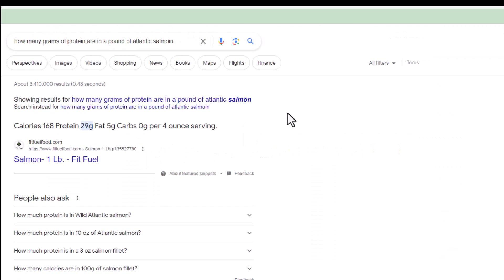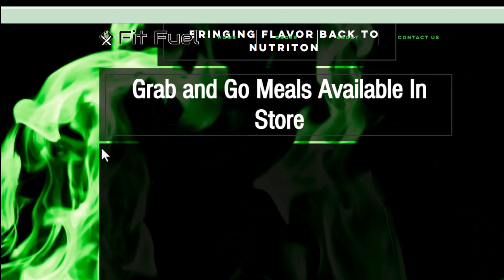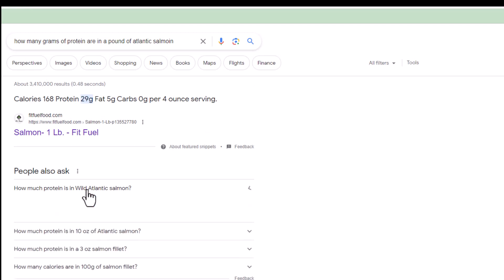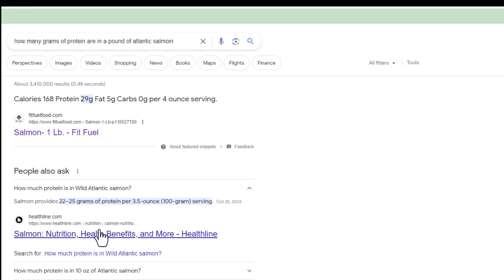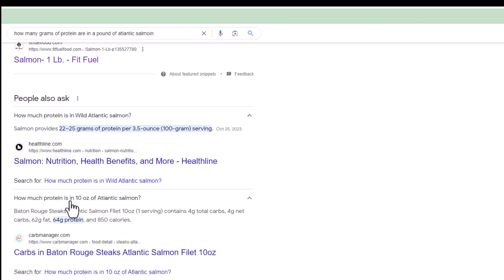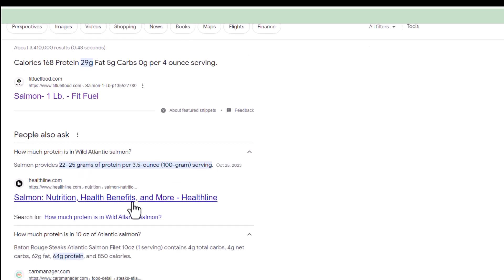There we go. So salmon, one pound, fitfuel.com. Let's take a look at that. Oh, they're trying to sell us something. How much protein is in wild Atlantic salmon? 20 to 25 grams per 3.5 ounces. This is interesting. Every one of these links that I'm getting is giving me different amounts. So you got to read carefully.